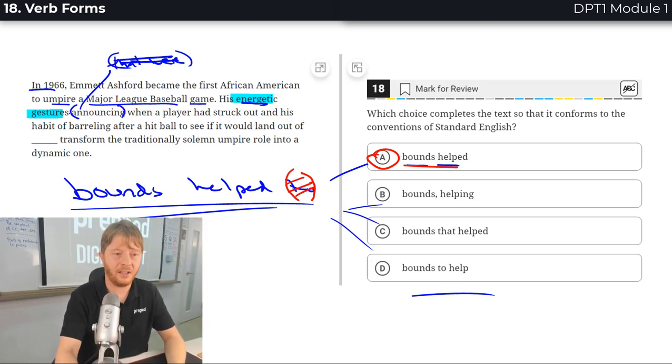That we're announcing when a player had struck out is a relative clause. Again, we'll talk about this in another lesson, but that's not part of the main subject. His energetic gestures. Energetic is an adjective. His gestures. That is the subject. Take good notes.